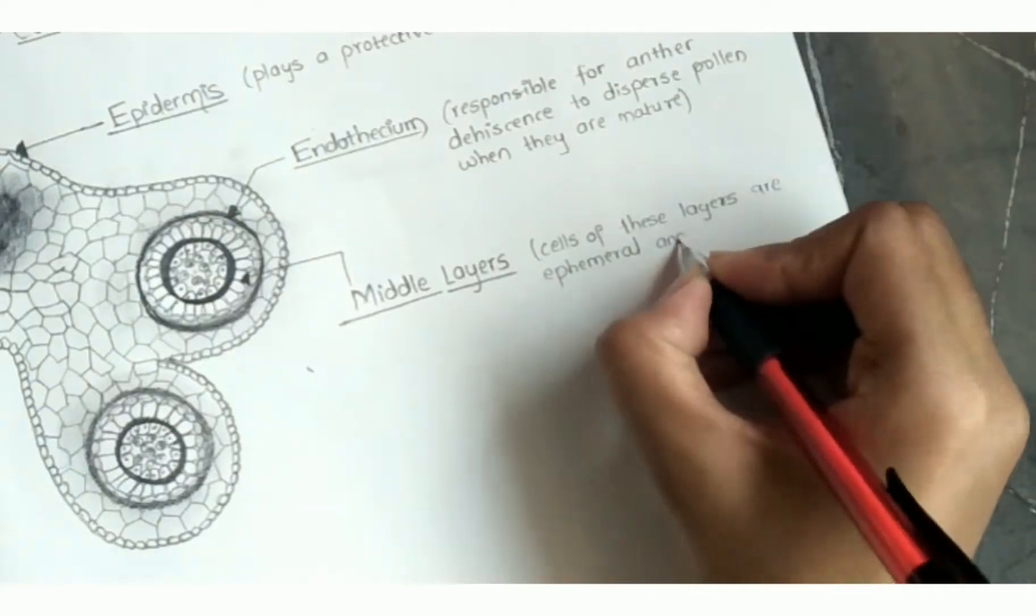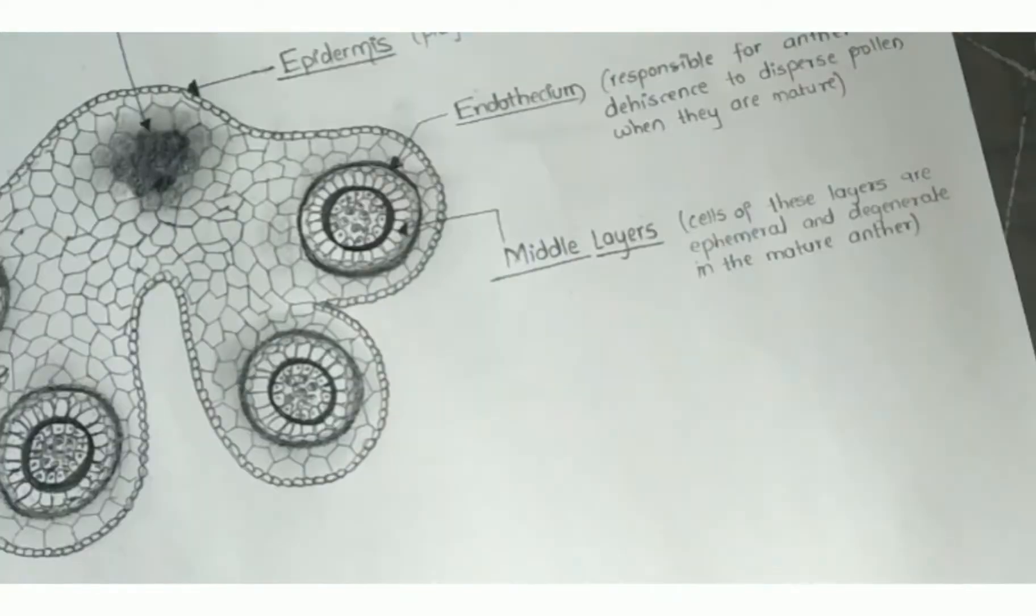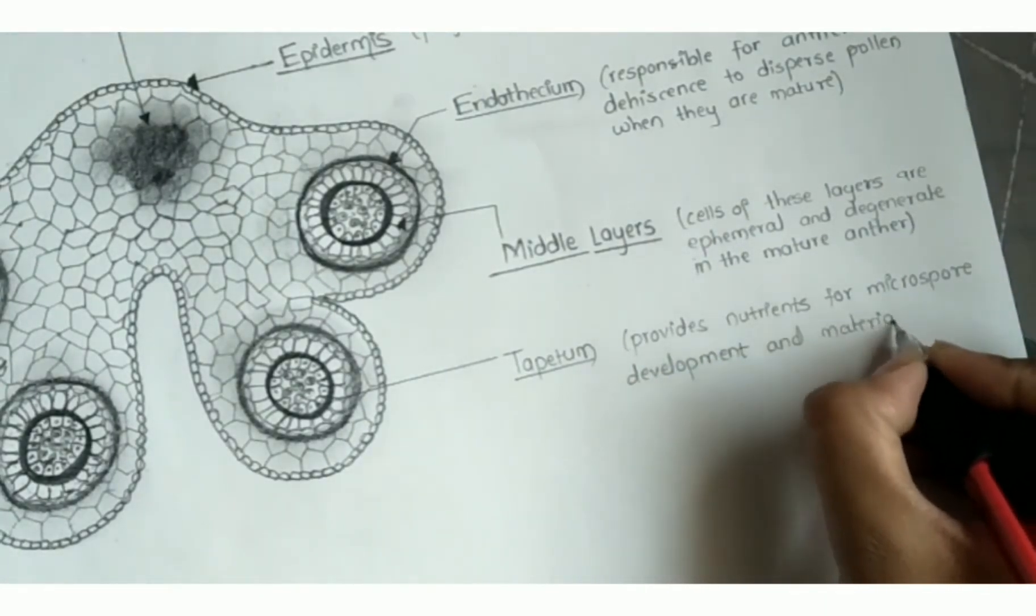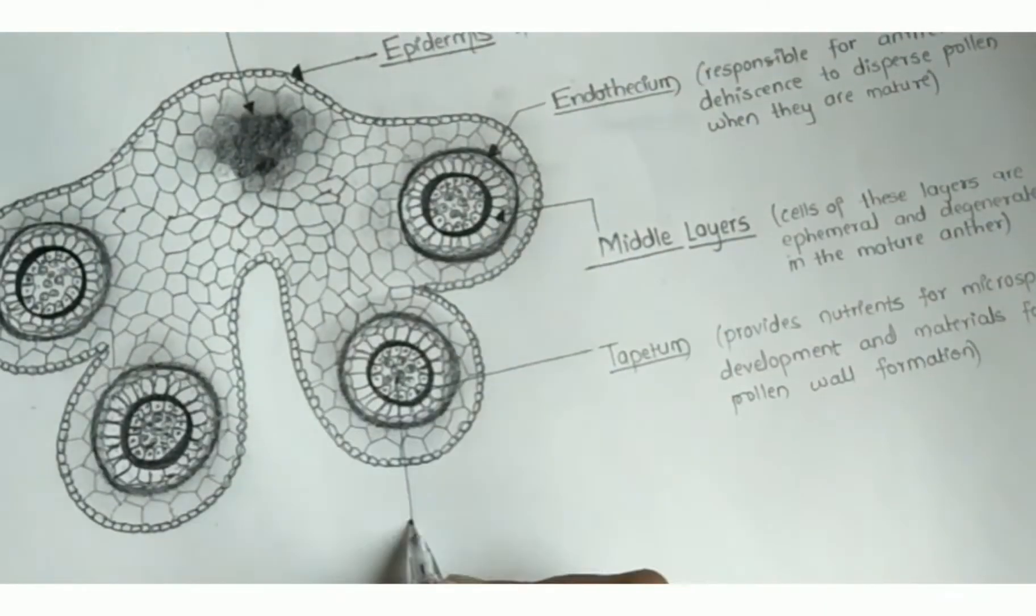So this is how we draw TS of anther with complete labeling and its functions. Thank you friends for watching my video. I hope it would help you in your studies.